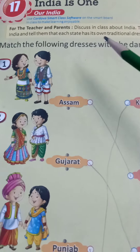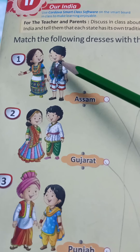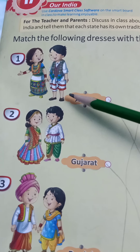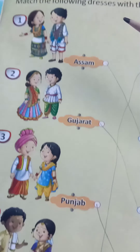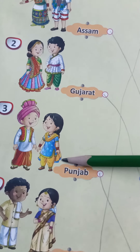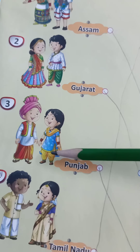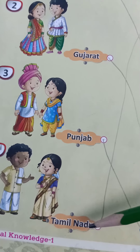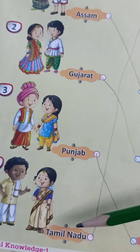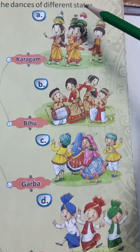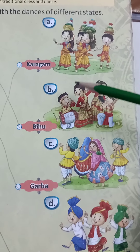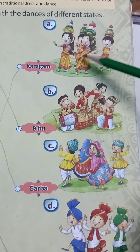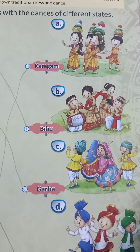Here one Assamese couple is shown, then Gujarat, Punjab, and Tamil Nadu. Here are the pictures of different states' dances.